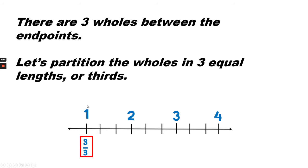So one is equivalent to three-thirds, and if we're going up by a third, we would add one to the numerator and leave the denominator as three.